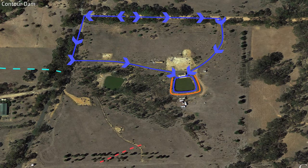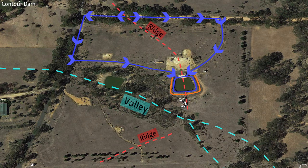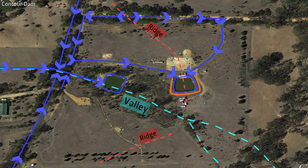This dam will also connect to an adjacent valley pond by an on-contour drain, so the ponds will fill together to the same height, with one spillway needed between the two of them.